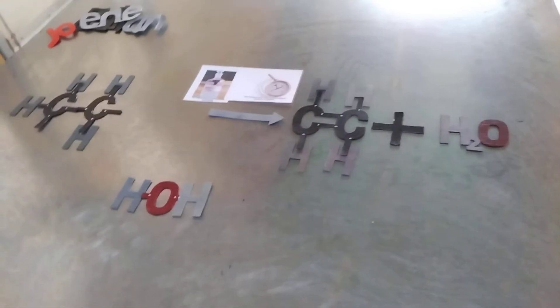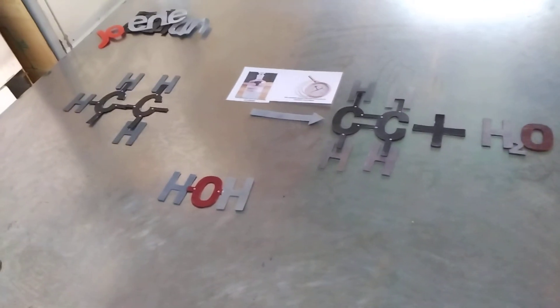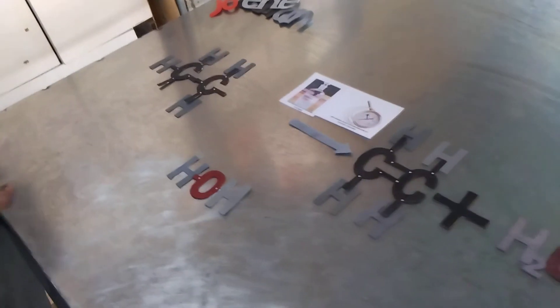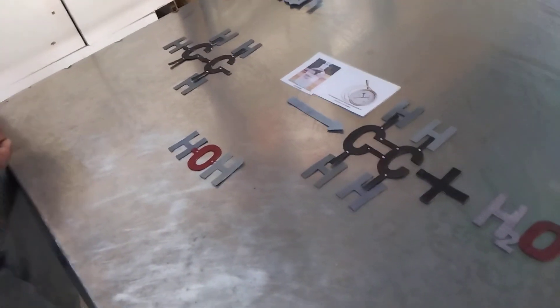And this molecule now is called an ethene. So basically that is what we call a dehydration reaction, or removal of water molecules from an ethanol. In this case it is an ethanol to form ethene.